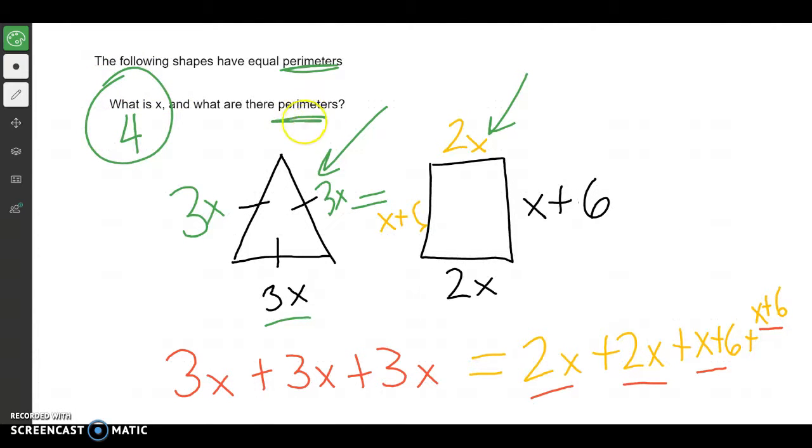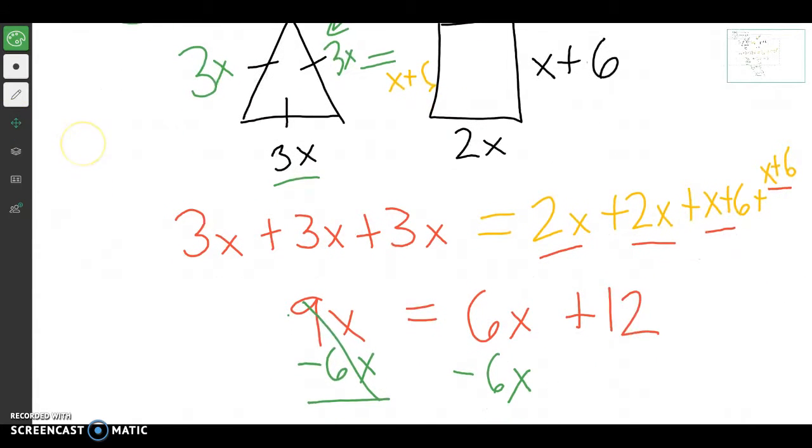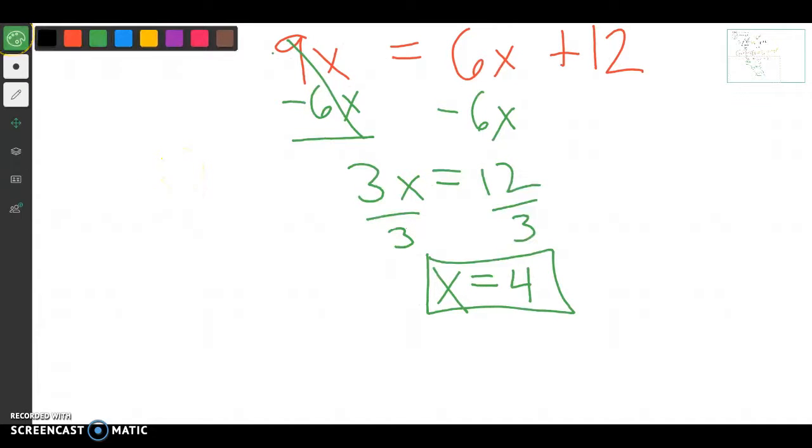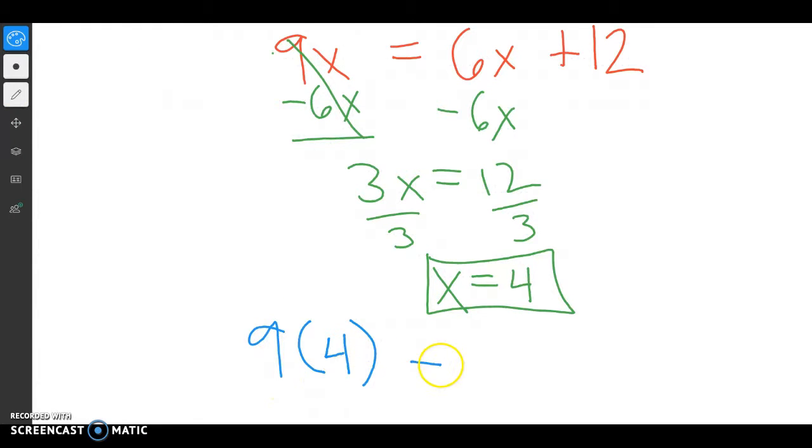Now we have to find their perimeter. And I'll find their perimeter by taking one of the shapes and plugging in for x. So this one's probably the easiest one to plug in. So my triangle, if we look over here, my triangle had a perimeter of 9x. So we'll go down here and put in 9. Instead of writing x, I'm going to write 4 because that's what we found x is. And I'll get that. That answer is 36.